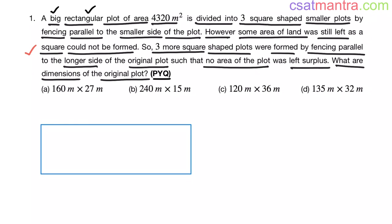Now, a big rectangular plot. This is rectangular plot. In rectangle, sides are not equal, whereas in square all sides are equal. The longer side we call it as length. The smaller side we call it as breadth. Now this plot is divided into three square-shaped smaller plots. How? By fencing parallel to the smaller side of the plot. Now some area of the land was still left as a square could not be formed. This land, we cannot form square here.